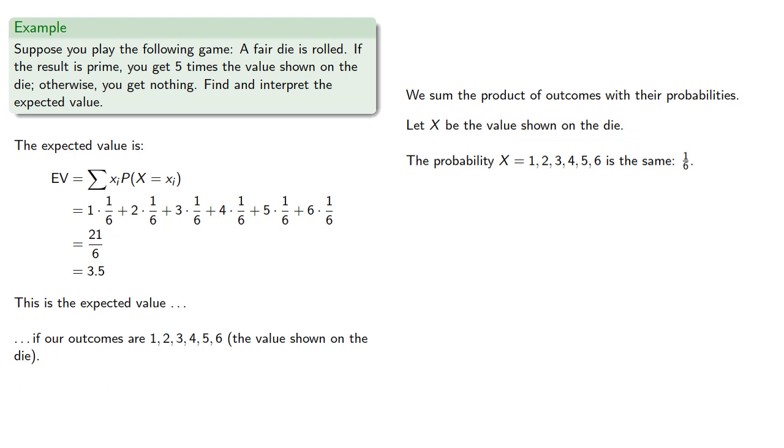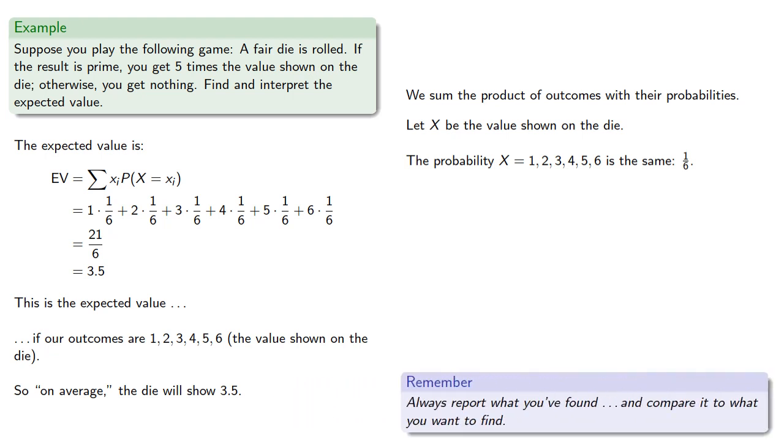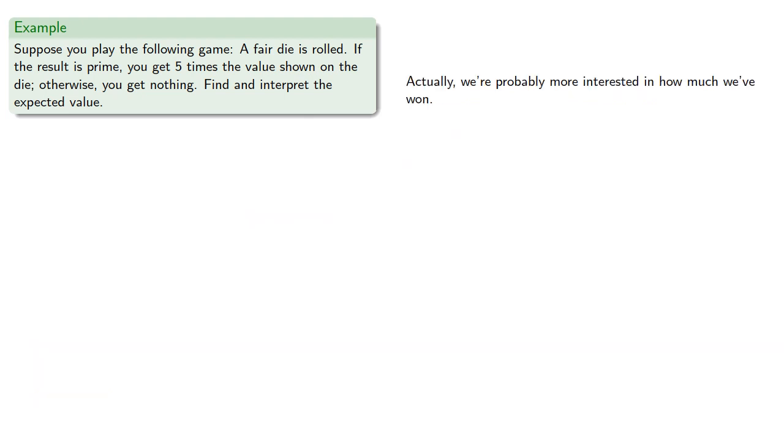So on average, the die will show 3.5. And here's an important idea in life: always report what you've found and compare it to what you want to find. And in this case, while we've technically answered the question, we are probably more interested in how much we've won.